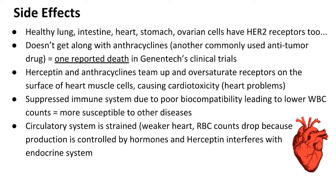In addition, you can expect a suppressed immune system because having all these antibodies present in your body means Herceptin has poor biocompatibility, which will activate the immune system and put it under stress. You will also have lower white blood cell counts, making you more susceptible to other diseases while undergoing chemotherapy. The circulatory system will be strained — you will have a weaker heart due to interference with heart muscle cells, and your red blood cell count will drop because red blood cell production is regulated by hormones, and Herceptin is interfering with the endocrine system.